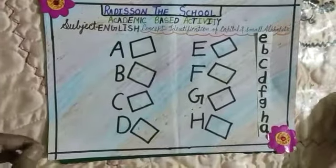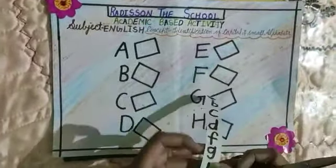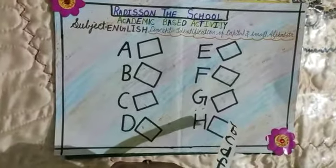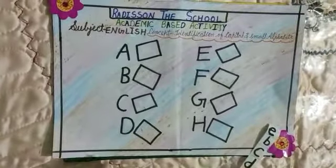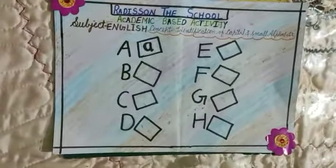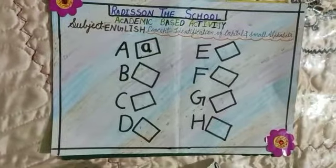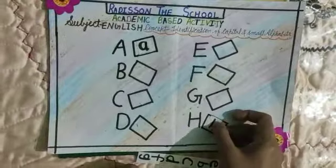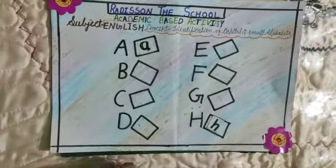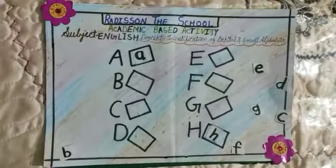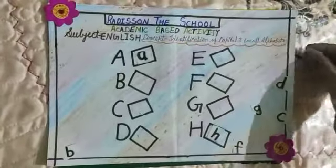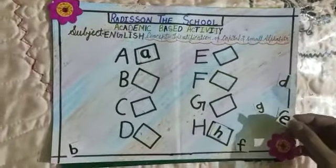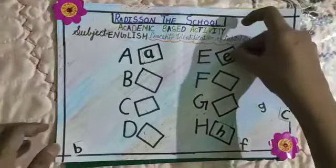Okay, then you will identify — this is capital A, so where is small A? Let's see where small A is. Here it is — small A. We will cut it from here and paste it here. Like this we will identify all the letters and paste them. Here is capital H, so paste small H here.